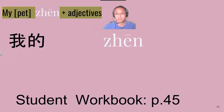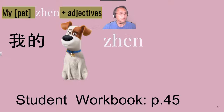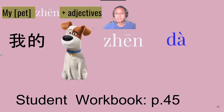Wǒde [item] zhēn [description]. Let's see what we have first. Our first description is 狗 (gǒu). 我的狗 (wǒde gǒu) — my dog — 真大 (zhēn dà). 我的狗真大 — My dog is really big.